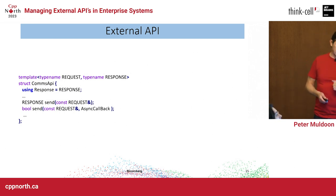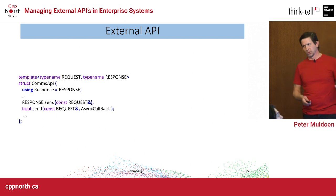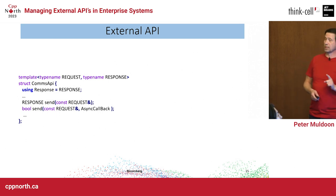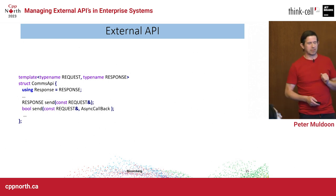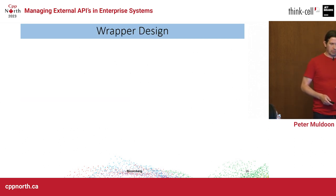One key thing about the API: it gives you back a piece of managed memory with the response in it — what's called a managed pointer, because they didn't have unique pointers in the language at the time and made something roughly equivalent. This is the external API I've been given, and I want to constrain it in my system. I need a wrapper.